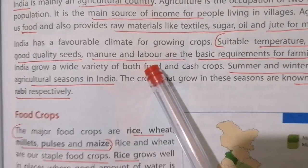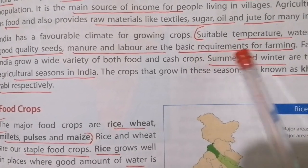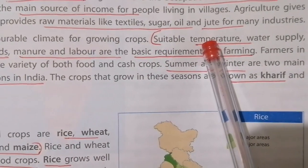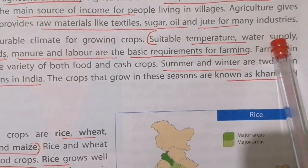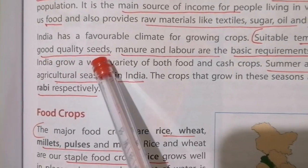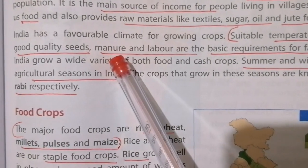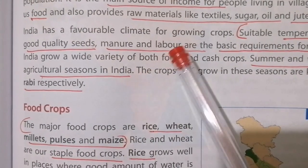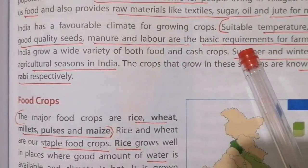For agriculture you need a few basic requirements. The first one is suitable temperature. You also need water supply, because for growing plants you need water. Then good quality seeds, manure — which is the fertilizer you give to the plant — and labor, which is the working people. These are the five main requirements for farming.